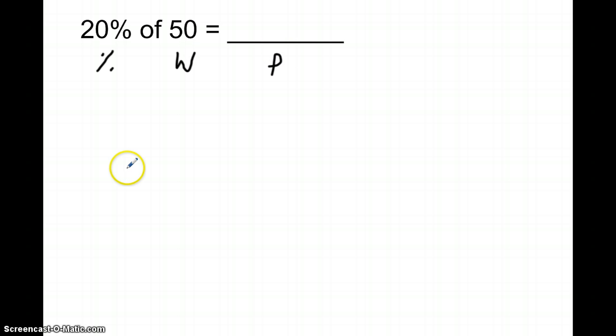In order to do a double number line, I actually use a single number line just with numbers on the top and the bottom. I draw a number line and we always start out with zero and zero. My top is going to be my percent, and in this case because I was talking about money, dollars would be on the bottom.